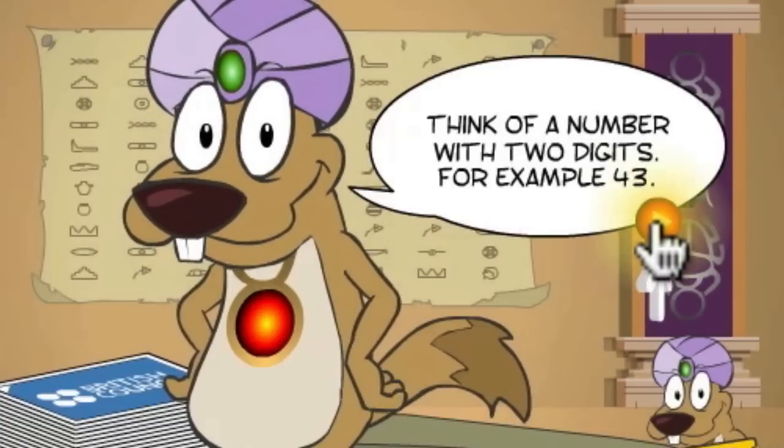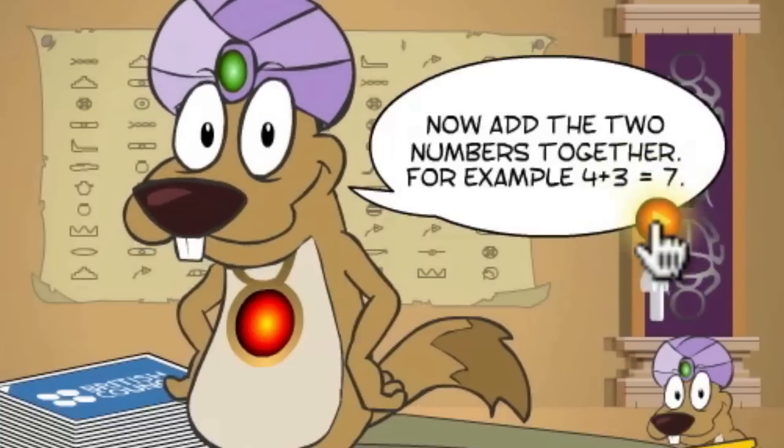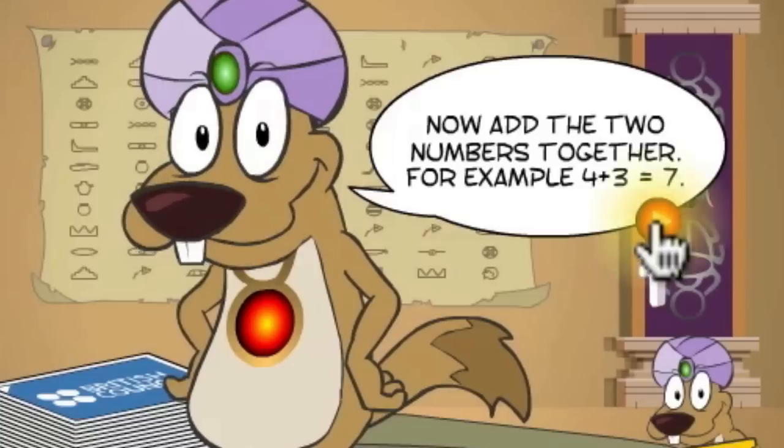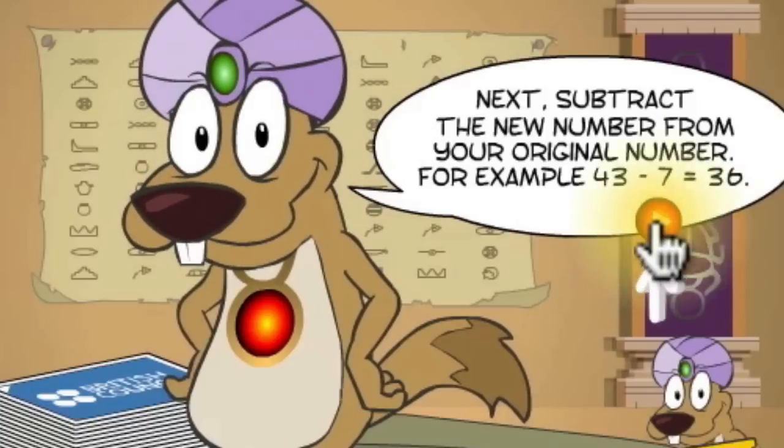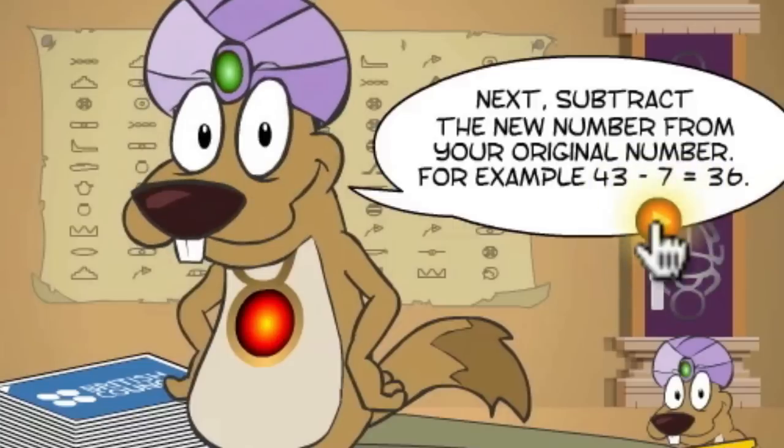This one's called the Magic Gopher. You start by picking a two-digit number, let's assume you pick 43. Once you've chosen that number, and you can pick any two-digit number, the next thing we do is add together the two digits. So if you chose 43, you add 4 and 3 to get 7.